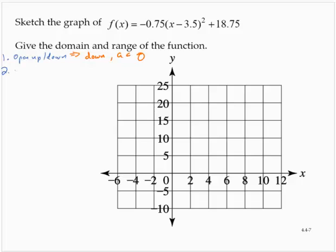Can we find the vertex? Well, we see this as a shift. We see that the x-coordinate of the vertex is 3.5, and the y-coordinate is 18.75. So the vertex is (3.5, 18.75). And we also know, since it opens down, that this is the maximum.